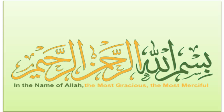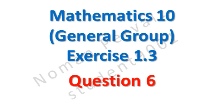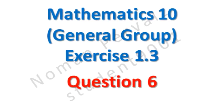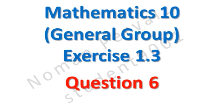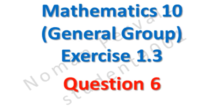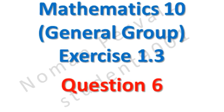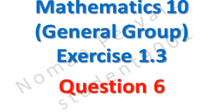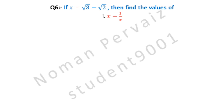In the name of Allah, the most gracious, the most merciful. In this video we are going to solve question number 6 of 10th class math, general group, exercise 1.3. So stay with us. Question number 6 is: if x is equal to under root 3 minus under root 2, then find the values of — part 1 is x minus 1 over x. Let's see its solution.